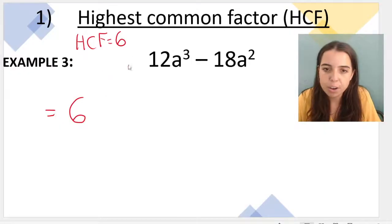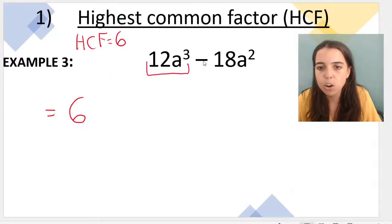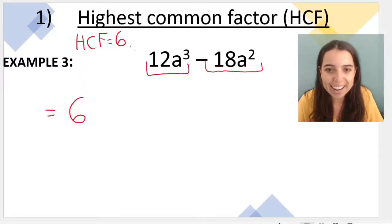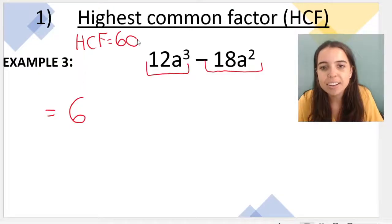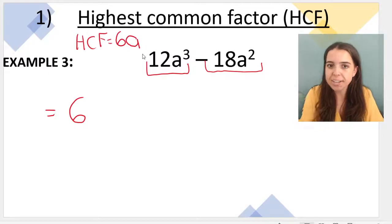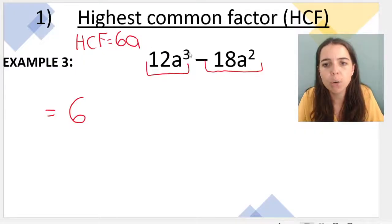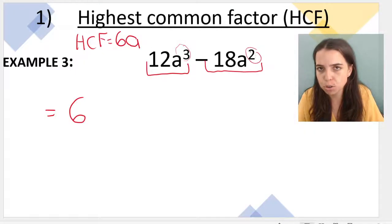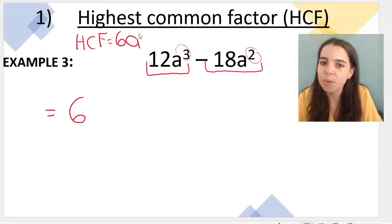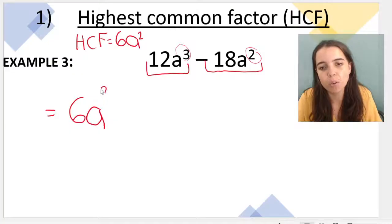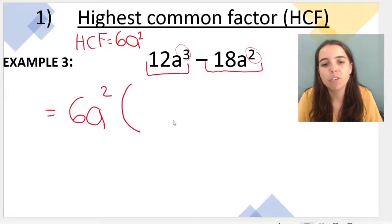Now can we take out a variable? Looking at term 1 and term 2, both contain the variable a, so yes. What is our rule? We take out the variable with the lowest exponent. Is a³ or a² lower? Surely a². So our highest common factor is 6a². We then open our leftover bracket.